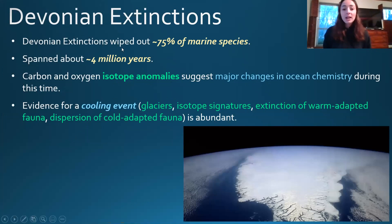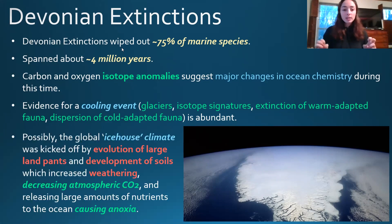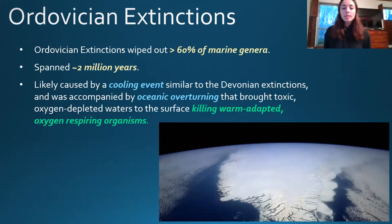The Devonian extinction wiped out 75% of marine species and spanned about 4 million years. Carbon and oxygen isotope evidence suggests major changes in ocean chemistry — specifically a cooling event, not a warming event. Evidence includes glacial evidence, isotopic signatures, extinction of warm-adapted fauna, and dispersion of cold-adapted fauna toward the tropics. This icehouse climate was possibly kicked off by the evolution of large land plants, which caused soil development, increased weathering, decreased atmospheric CO2 through both weathering and photosynthesis, and released large amounts of nutrients to the oceans, causing anoxia.